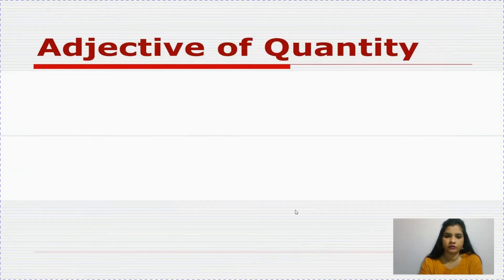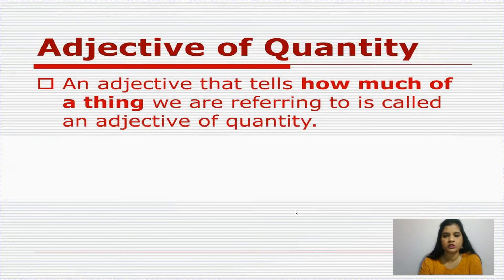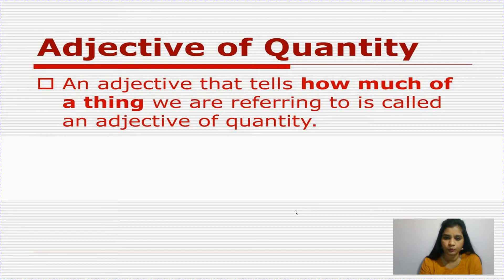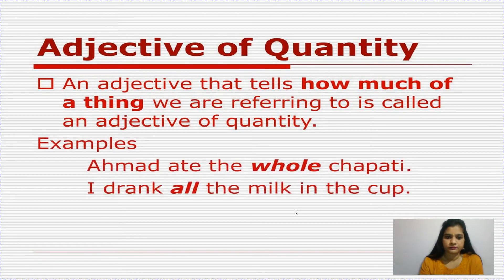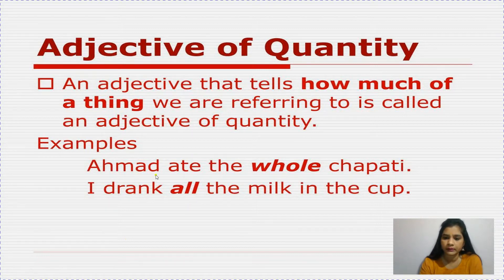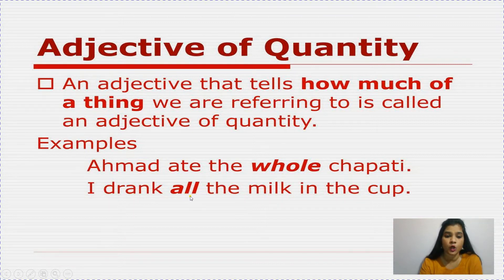Next is adjective of quantity. From the name itself you can define it. An adjective that tells us how much of a thing we are referring to is called an adjective of quantity — meaning how much. Example: Ahmad ate the whole chapati. How much? Whole — so 'whole' is an adjective and 'chapati' is the noun. Another example: I drank all the milk in the cup. Milk is the noun and 'all' is describing it, so 'all' becomes an adjective of quantity.